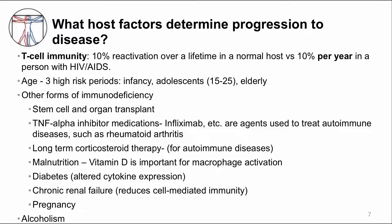I would just point out one of the more recent additions. Recall that TNF-alpha is an important pro-inflammatory cytokine produced by macrophages in the granuloma. TNF-alpha inhibitor medications are being used more often to treat autoimmune diseases like rheumatoid arthritis, and patients on these medications are at higher risk of progressing to TB disease. Diabetes is another quite common systemic disease that dysregulates the immune system and increases risk of progression to TB disease. This is an increasingly important host factor as more people are diagnosed with diabetes.